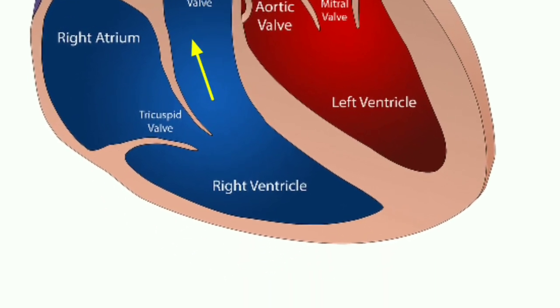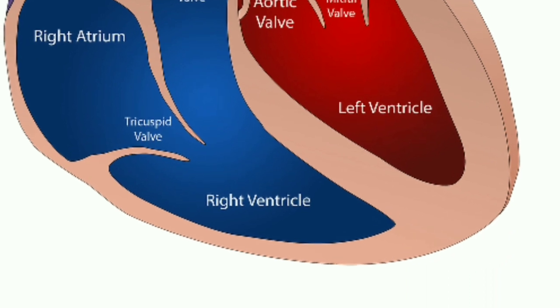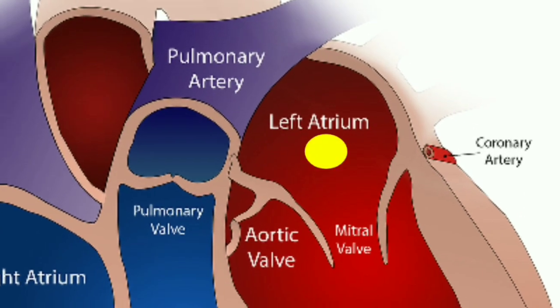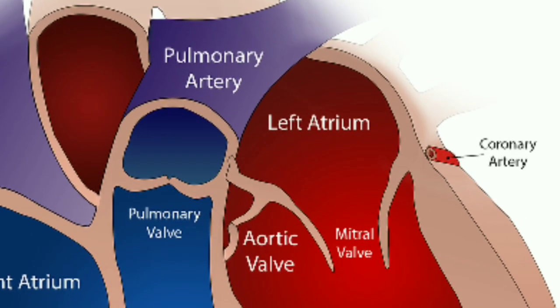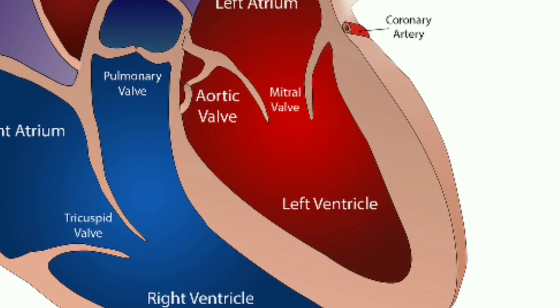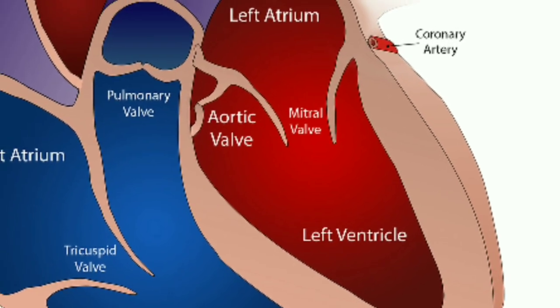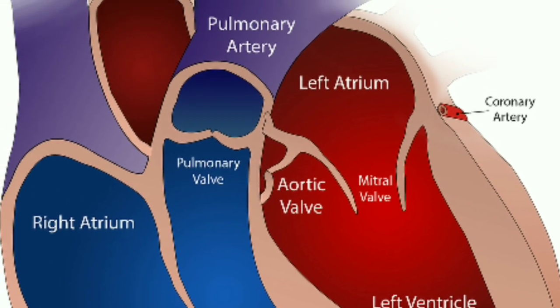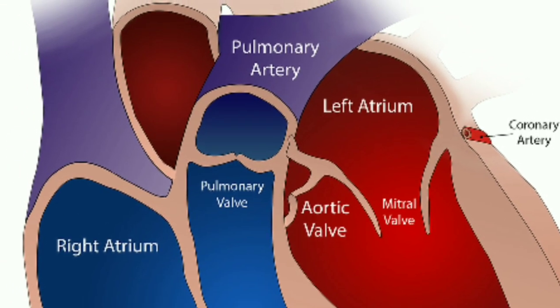Right ventricle: the lower right chamber of the heart that receives deoxygenated blood from the right atrium and pumps it under low pressure into the lungs via the pulmonary artery. Left atrium: the left atrium receives oxygenated blood from the lungs via four pulmonary veins and then empties it into the left ventricle. The walls of the left atrium are slightly thicker than the walls of the right atrium.